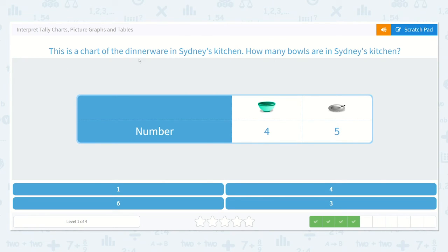This is a chart of the dinnerware in Sydney's kitchen. How many bowls are in Sydney's kitchen? Remember, we have our numbers here and our picture is right above it. Which one is a picture of a bowl? Yes, right here. And what number is right under it? Yes, four. Good work.